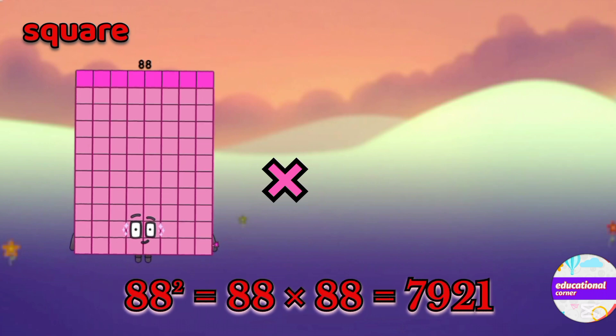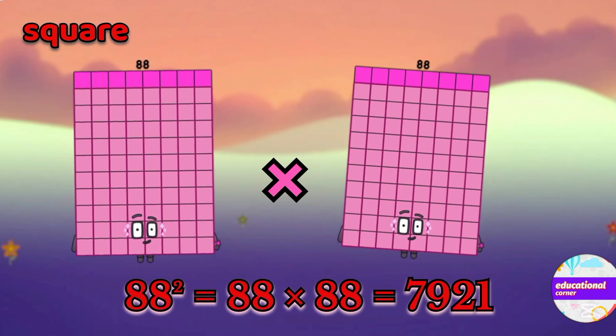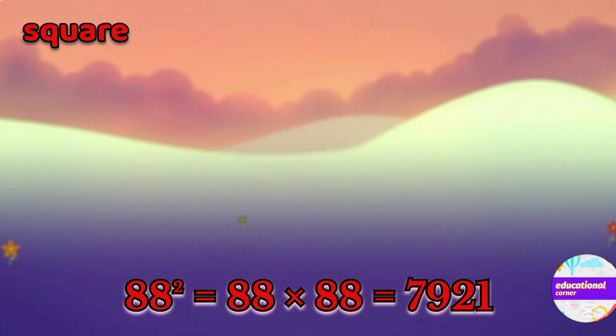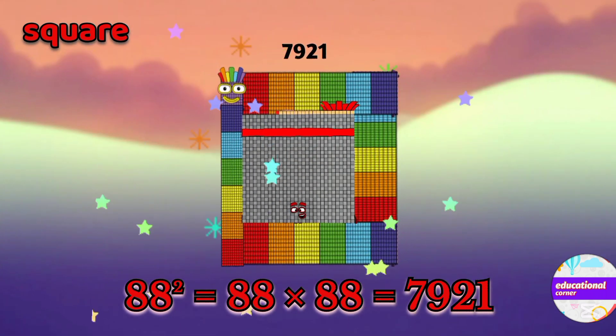88 multiply by 88. So the square of 88 is 7921.